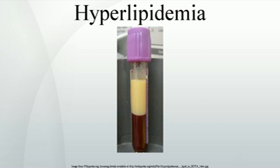Hyperlipidemias are divided into primary and secondary subtypes. Primary hyperlipidemia is usually due to genetic causes, such as a mutation in a receptor protein, while secondary hyperlipidemia arises due to other underlying causes such as diabetes. Lipid and lipoprotein abnormalities are common in the general population and are regarded as a modifiable risk factor for cardiovascular disease due to their influence on atherosclerosis. In addition, some forms may predispose to acute pancreatitis.